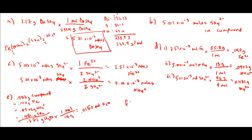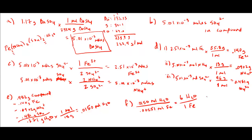For the last step, part F: determine the amount in moles of the compound and hence the value of X. We have 0.0150 moles of water and 2.51 × 10⁻³ moles of iron. Taking the ratio gives us 6 — six waters per one iron. So our final compound formula is Fe(NH4)2(SO4)2·6H2O.